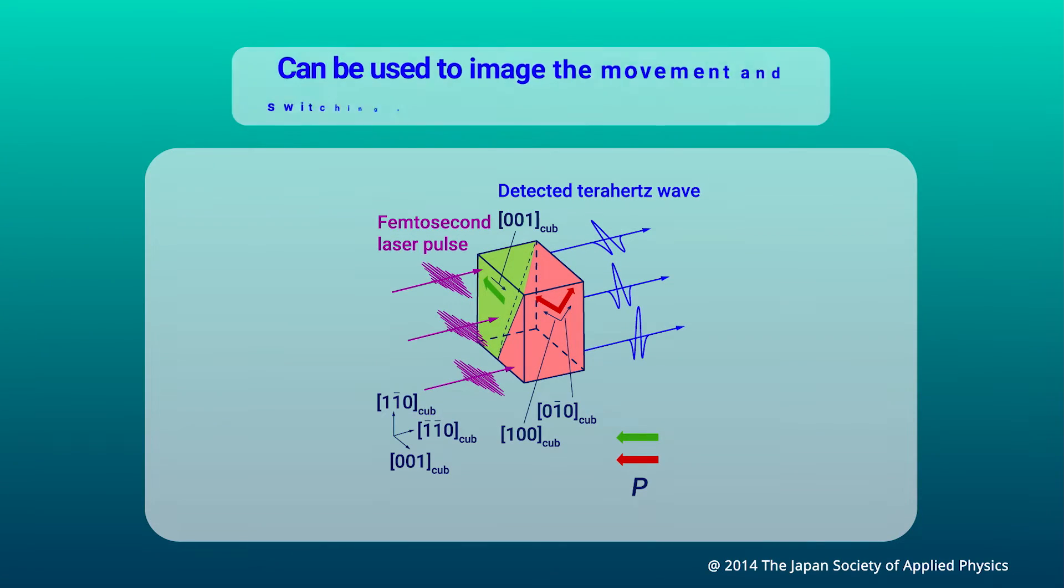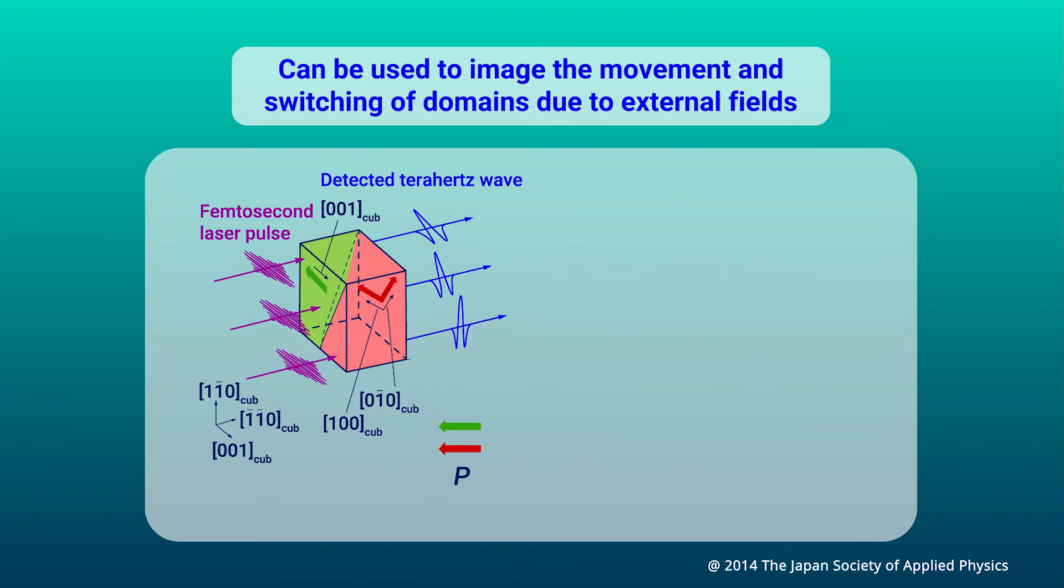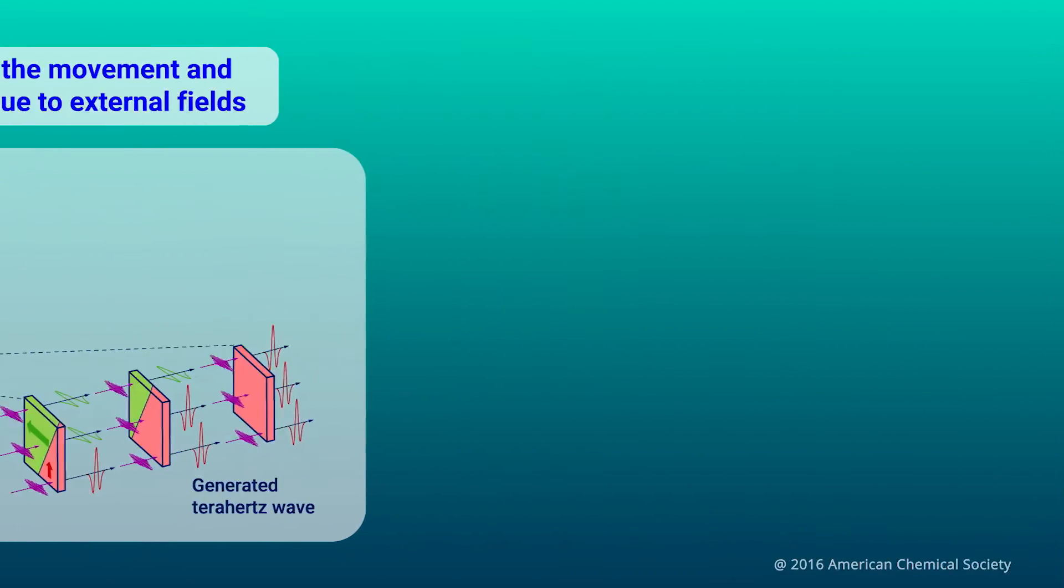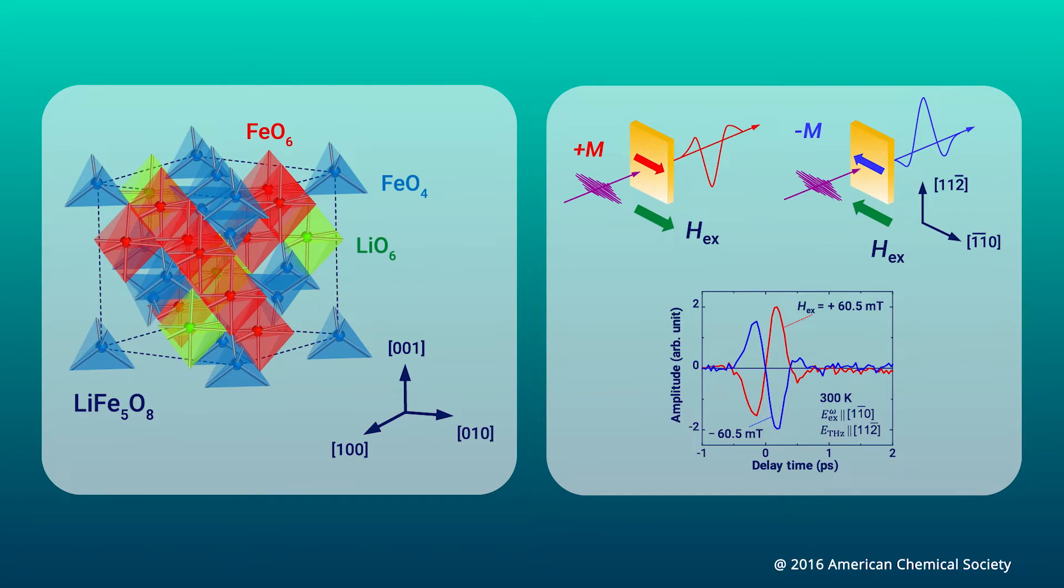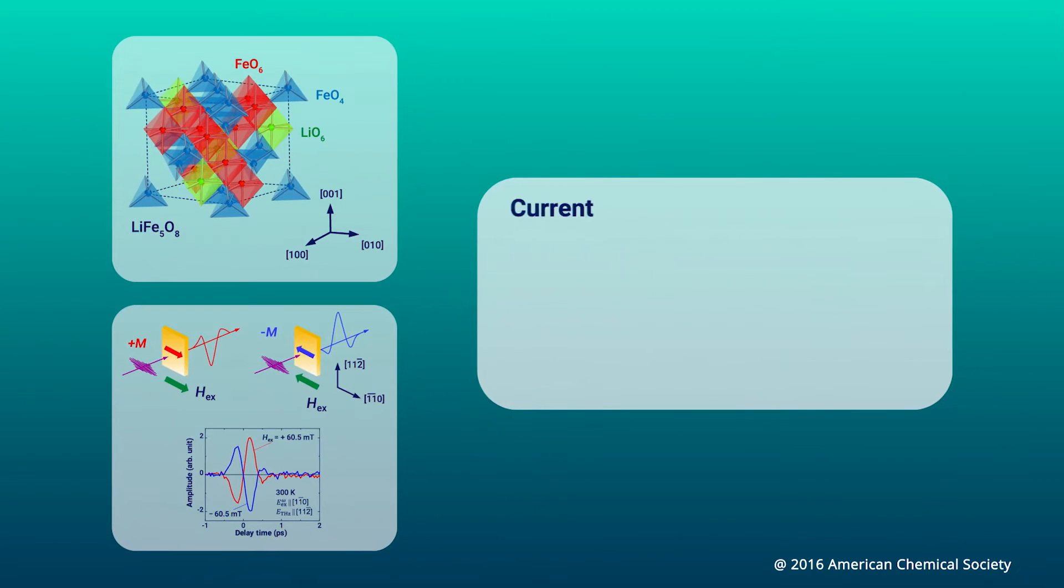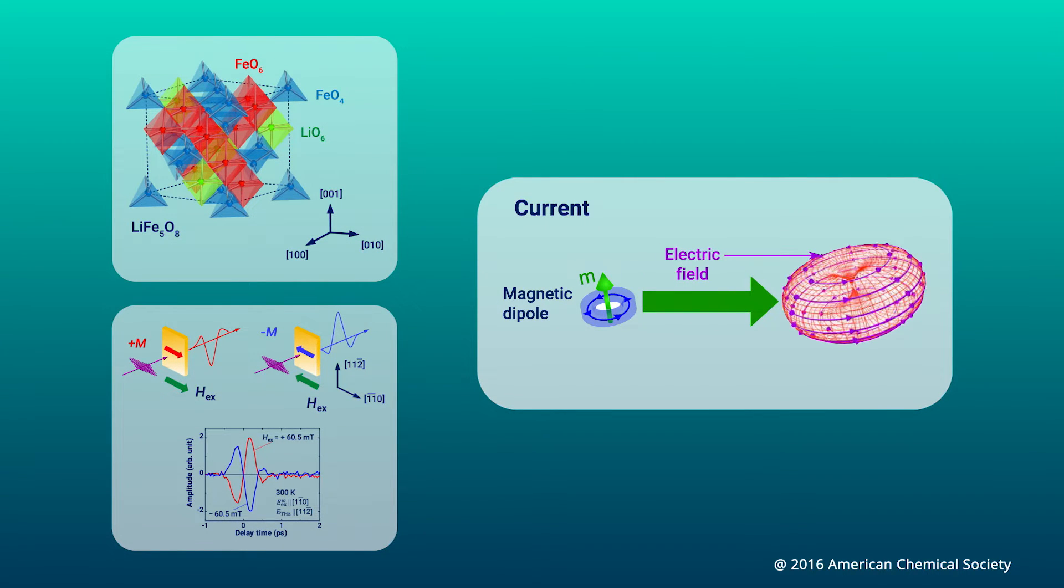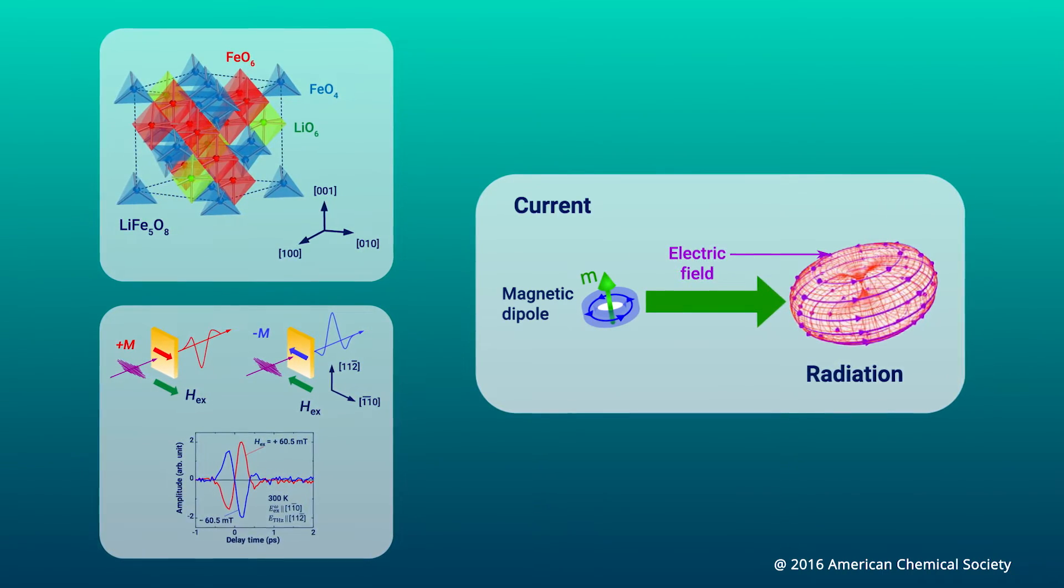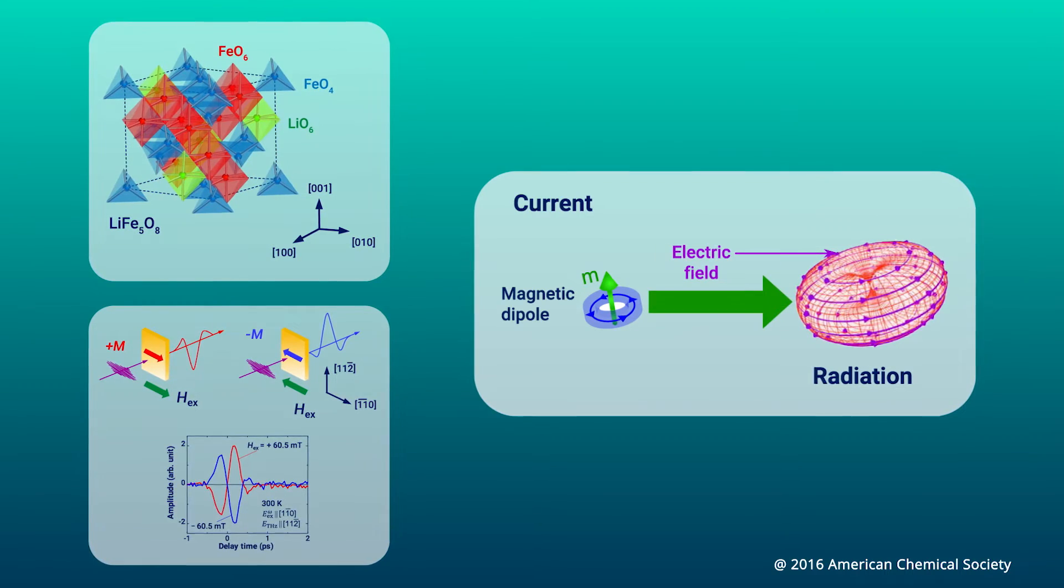Thus, it could be used to not only image the domains, but also how they moved and switched due to external fields. Additionally, terahertz radiation was useful for characterizing ferromagnetic materials. Similar to the electric dipole radiation phenomenon, terahertz emissions resulting from magnetic dipole radiation enabled the visualization of magnetic domains in ferromagnets.